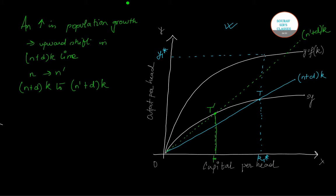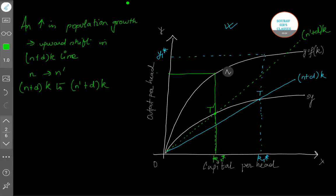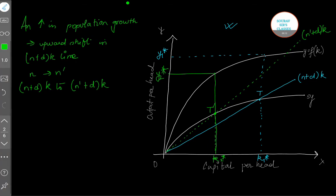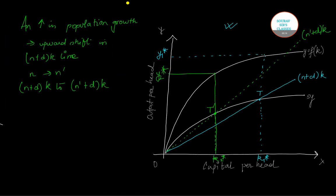So this is (n'+δ)k, where δ is the depreciation. Now it intersects the savings function here, so I will mark this as t'. I will extend this, so I get k₂*. Extend this, touch the output function, the production function, and this will give me y₂*.